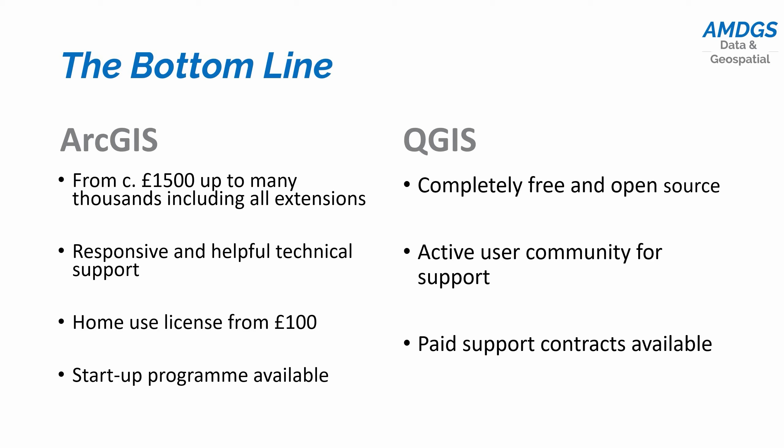ArcGIS on the other hand is very much a commercial piece of software — you'll need to sort out a license if you want to be able to use it. Now if you're a home user and you just want to experiment and make some maps, then it is possible to get a home use license for around about £100 at the moment. Exact prices may vary according to where in the world you are and the kind of local pricing, but you can get a home use license relatively inexpensively.